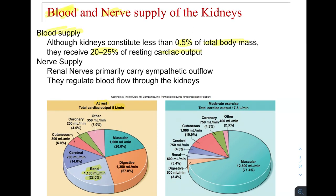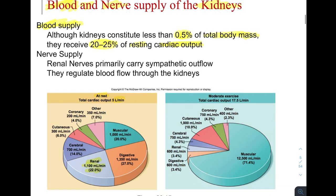Let's look at the blood and nerve supply of the kidneys. The blood supply is very significant. Even though your kidneys are about 0.5% of your total body mass, they receive 20% to 25% of your cardiac output at rest. At rest, your total cardiac output is about 5 liters per minute, and the renal cardiac output is a little over 1 liter per minute — about 22% of your total.